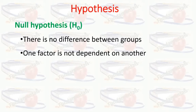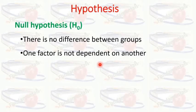The null hypothesis indicates that there is no difference between two groups, or that one factor is not dependent on another factor. If we are comparing groups, we say there is no difference between them. If we are studying the effect of one factor on another, we say one factor is not dependent on the other.